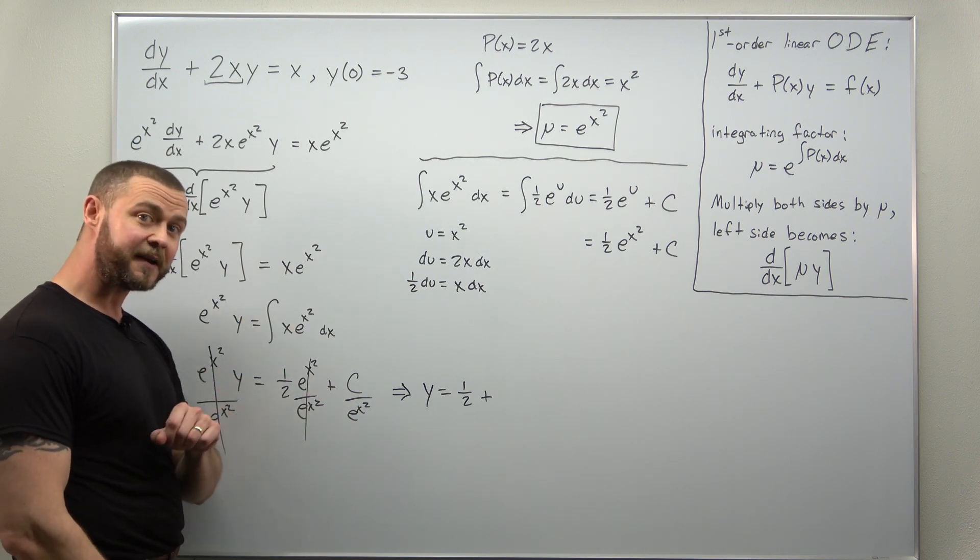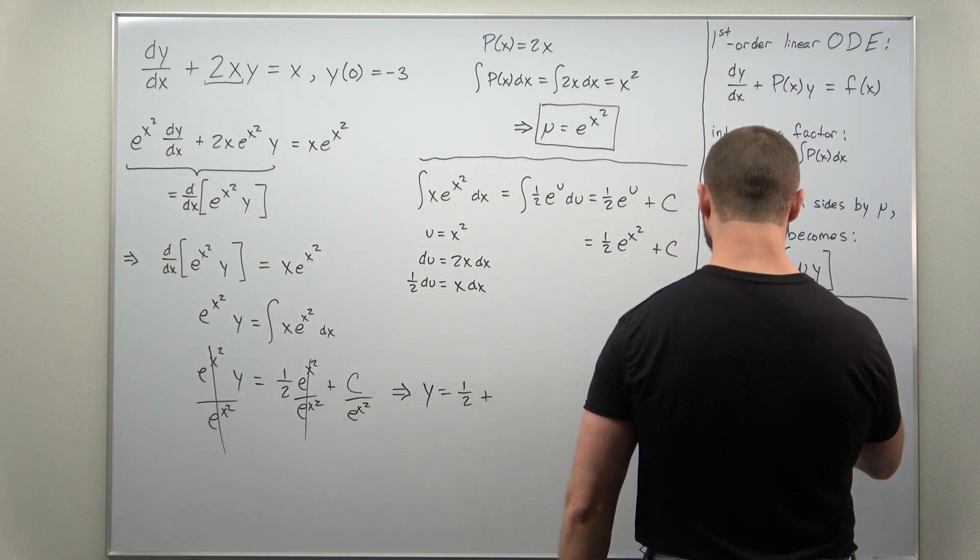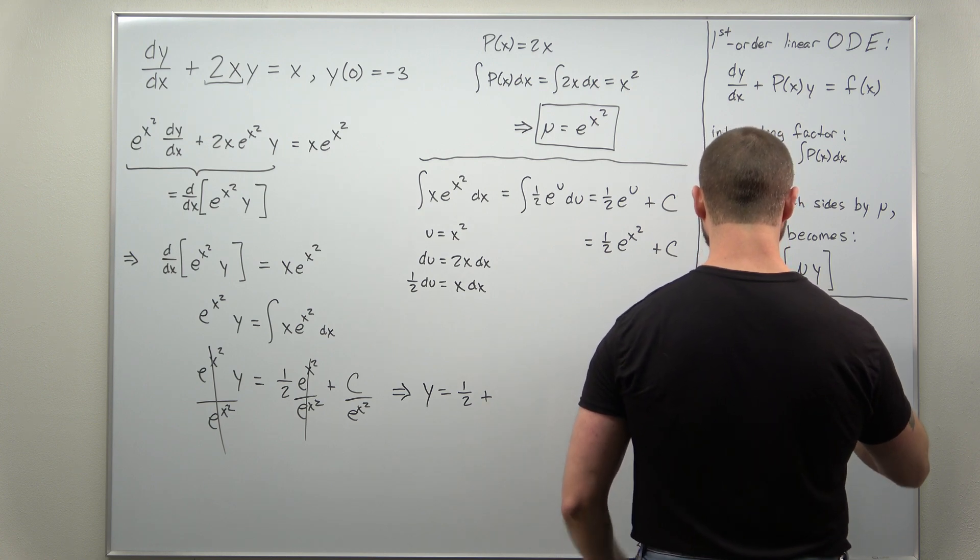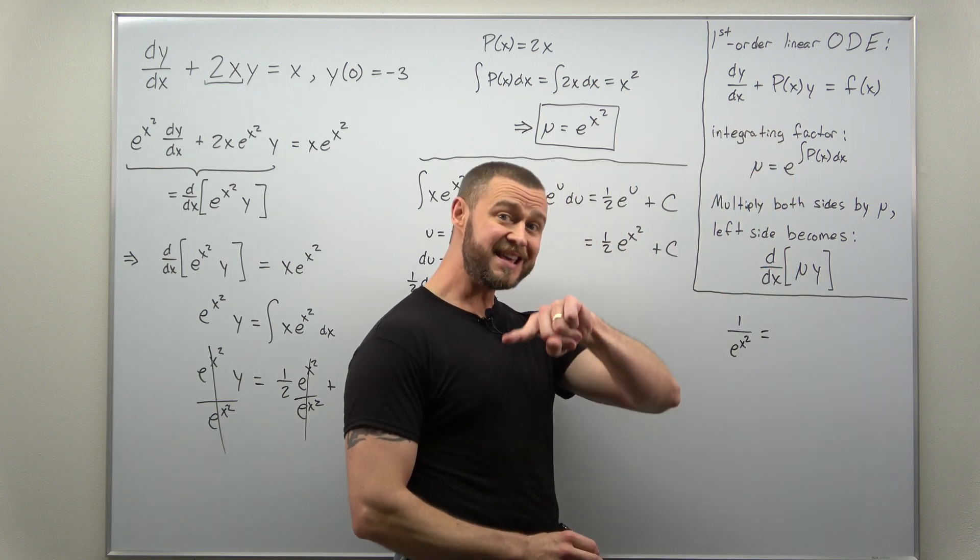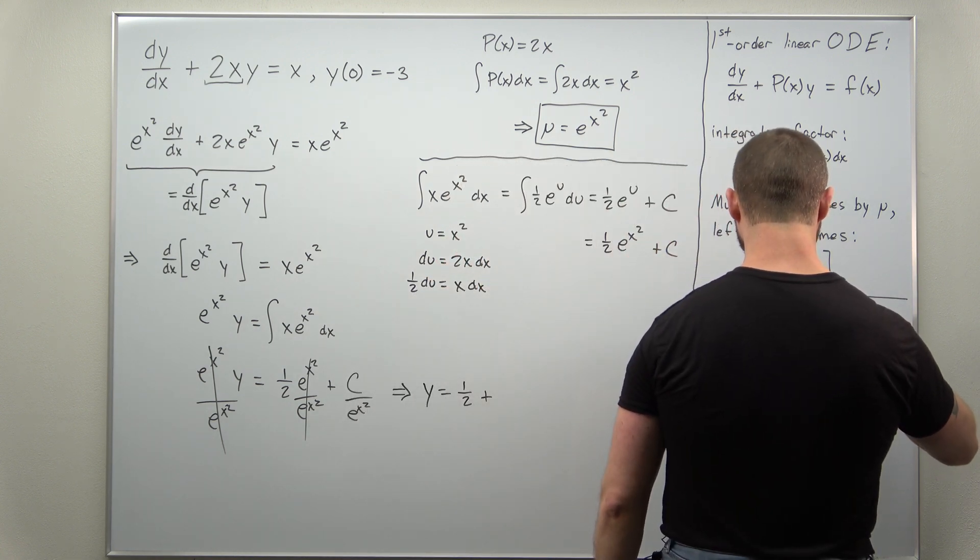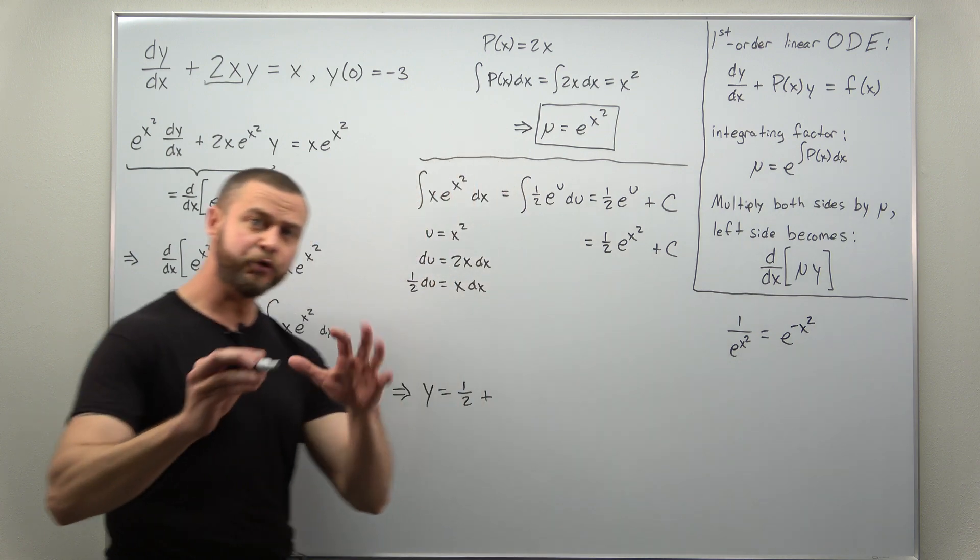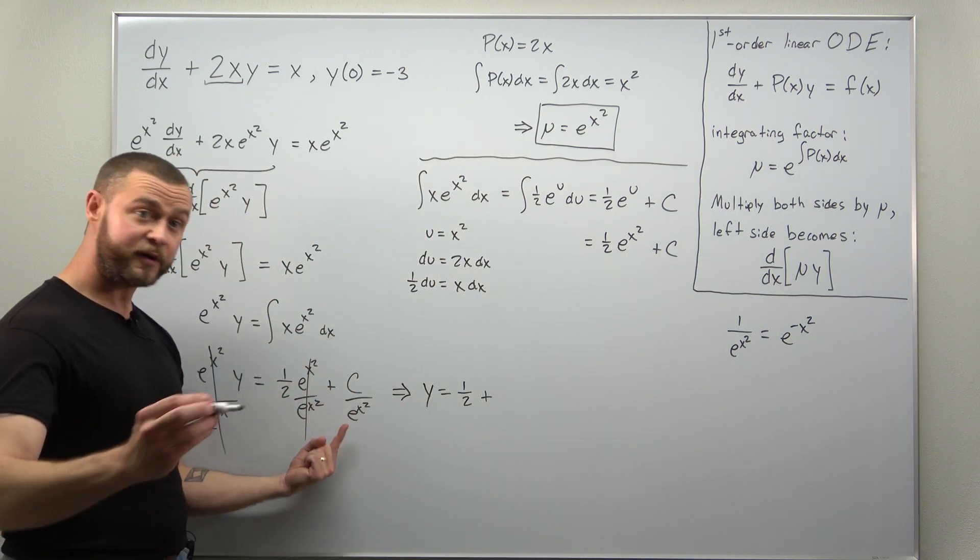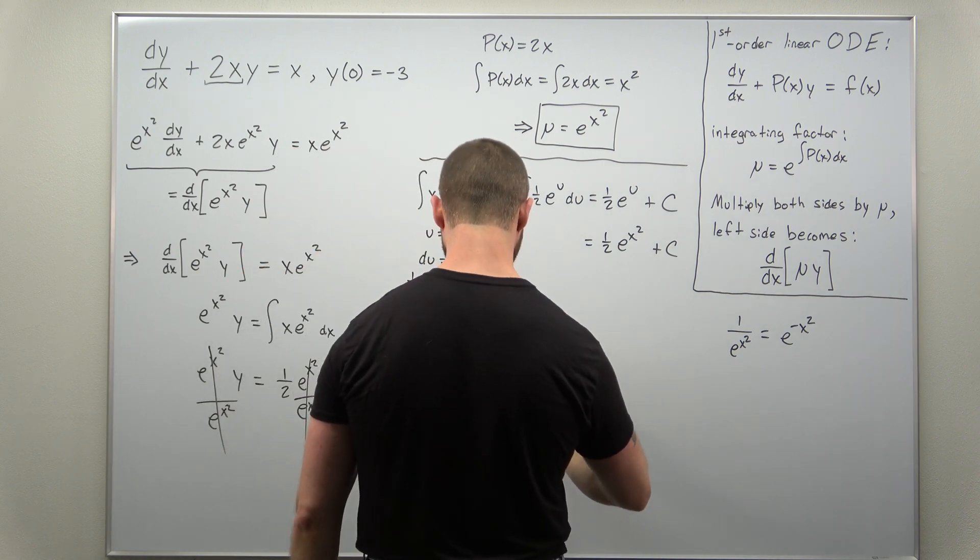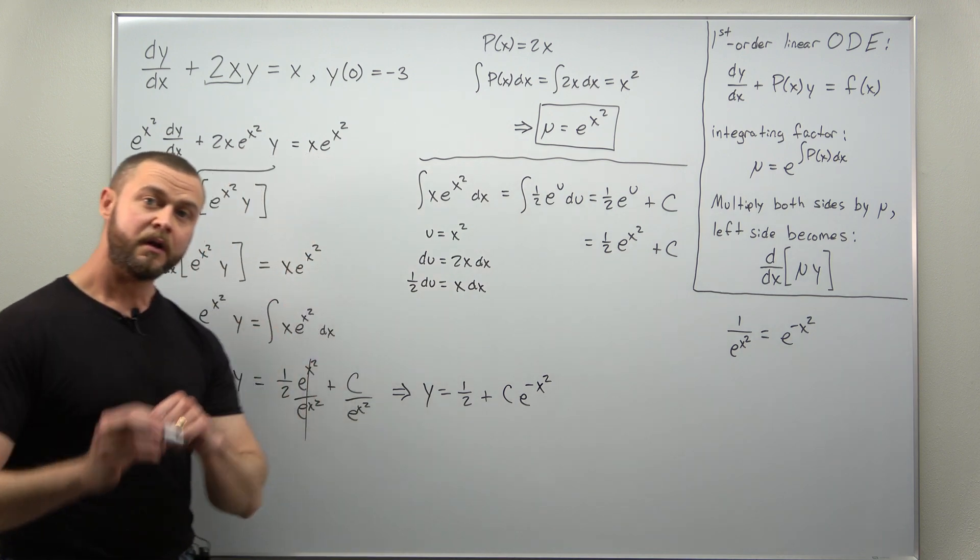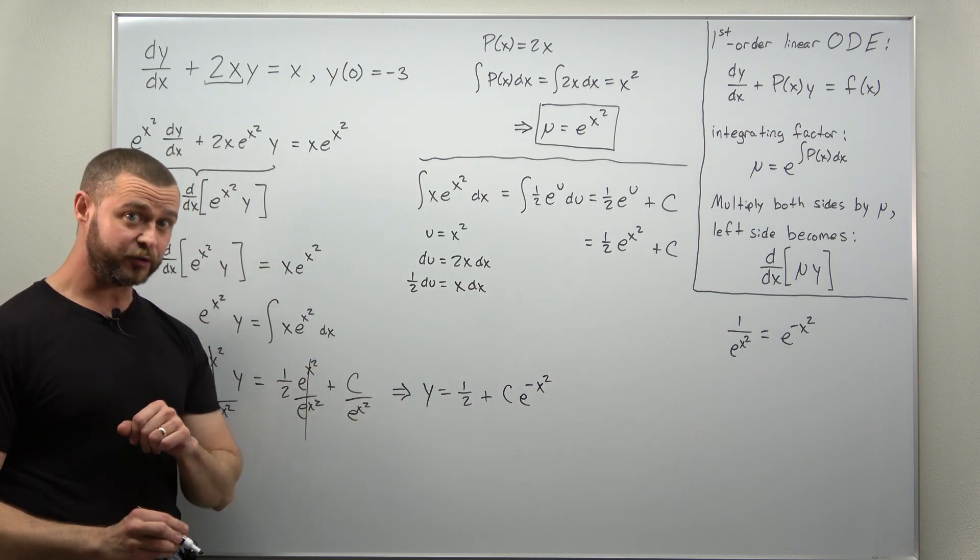The constant's divided by e to the x squared, but I'm going to write 1 over e to the x squared as e raised to the negative x squared. That just makes the solution look a little cleaner, in my opinion. So here we'll rewrite that as plus c times e to the negative x squared, and that is the explicit solution.